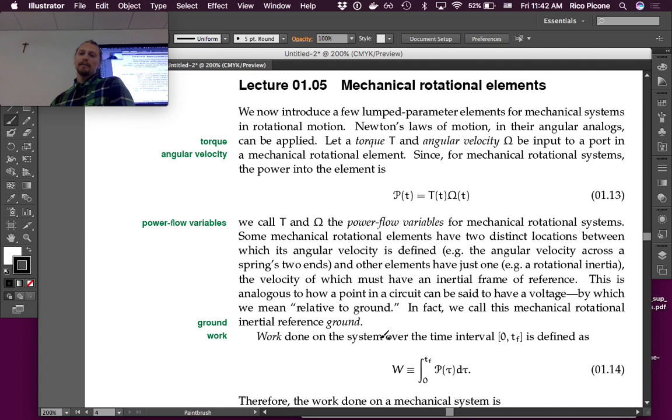Ground being the inertial reference frame. This is analogous to how a point in a circuit can be said to have a voltage, by which we mean relative to ground. The flywheel can have an angular velocity, meaning relative to some inertial reference frame.